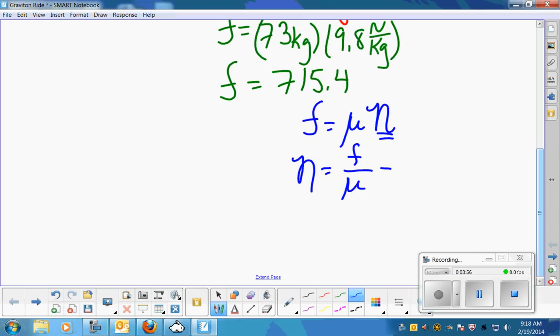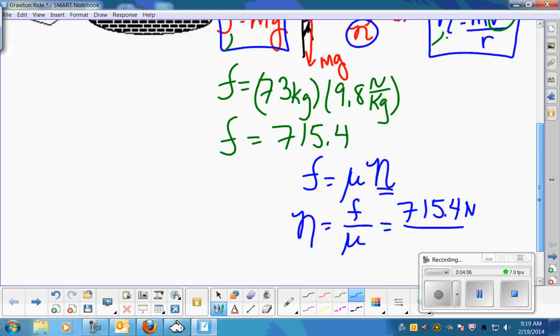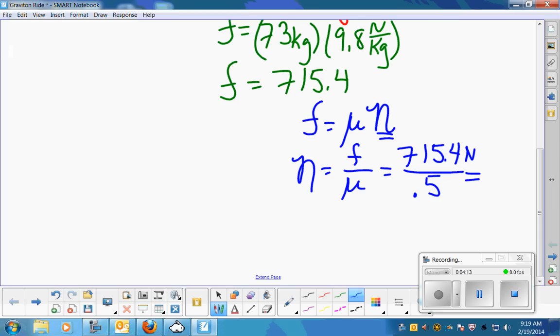So normal force is going to be friction divided by the coefficient of friction. My friction force is 715.4. That's in newtons. My coefficient of friction, way up here, is 0.5. So 0.5. No units on the coefficient. Okay. So 715.4 divided by 0.5 is going to be the same thing as multiplying by 2. And I get 1430.8.